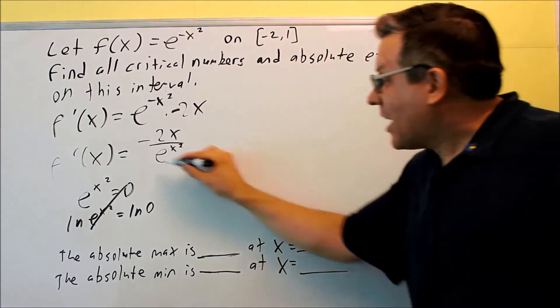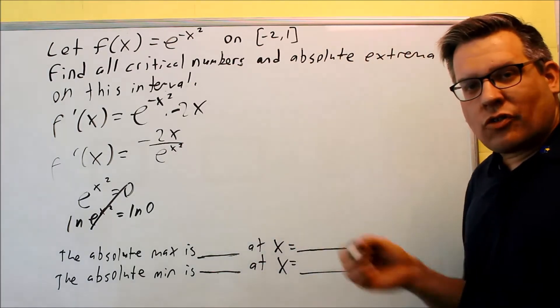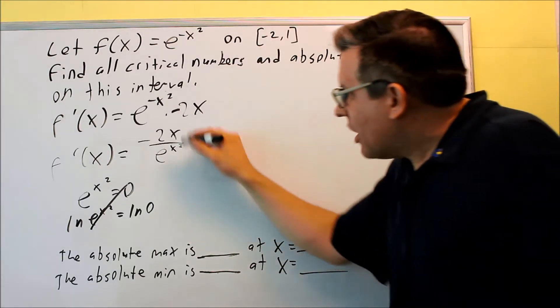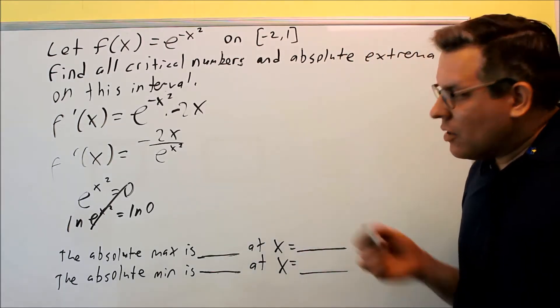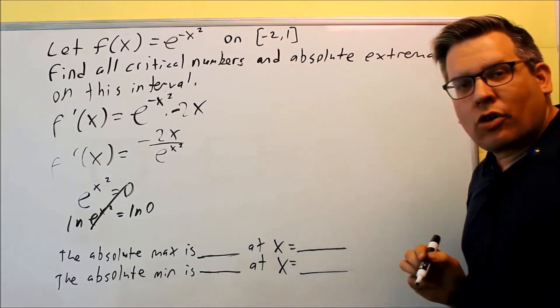So if the bottom is never equal to zero, that means there's no place where this is going to be undefined. Okay, so we know that we're not going to find any critical numbers that way.